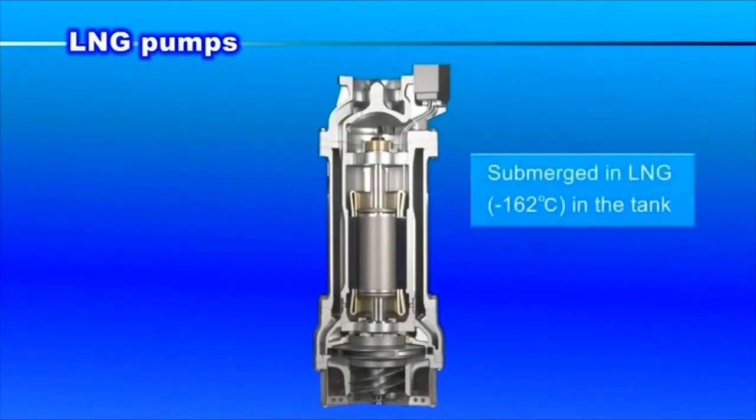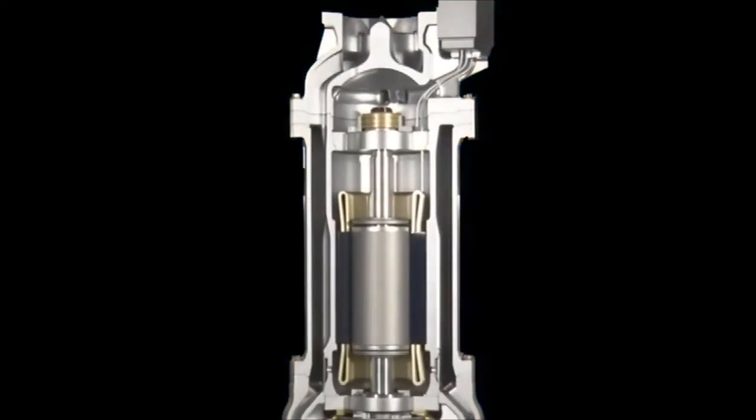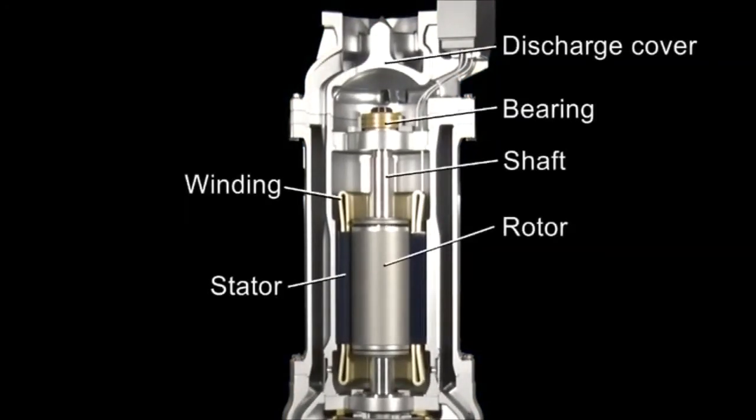The pump for LNG cargo handling is a submerged pump that can be found at the bottom of an LNG tank. The motor is made of a special cryogenic metal because it is also submerged in the LNG liquid with the boiling point at minus 162 degrees Celsius.